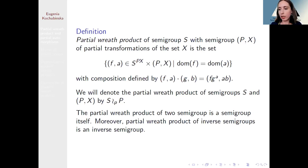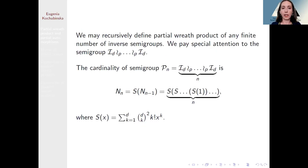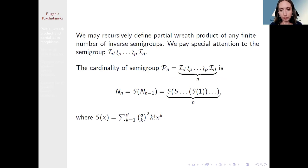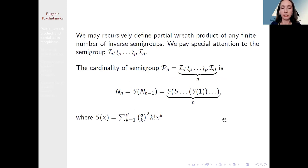The partial wreath product of a finite number of semigroups is again a semigroup, and in the case of inverse semigroups it is an inverse semigroup. I will pay special attention to the partial wreath product of inverse semigroups acting on the set {1, 2, ..., d}, and we will need the number of elements of these semigroups. I denote by pn the partial wreath product of n copies of inverse symmetric semigroups acting on the set of first d elements.